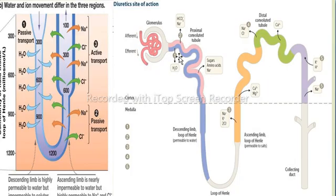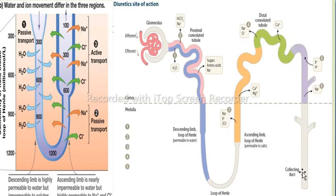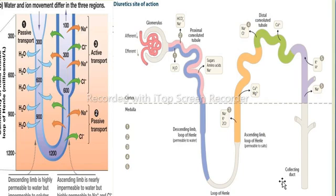Now let's see how the mechanism of action happens in the nephron. The starting point of the nephron is the glomerulus, then the proximal convoluted tubule, then the loop of Henle, then the distal convoluted tubule, and finally the collecting duct. When our body has excess fluids and electrolytes — sodium, potassium, chloride — they pass through the nephron from glomerular filtration up to the collecting duct and finally come out through urine.